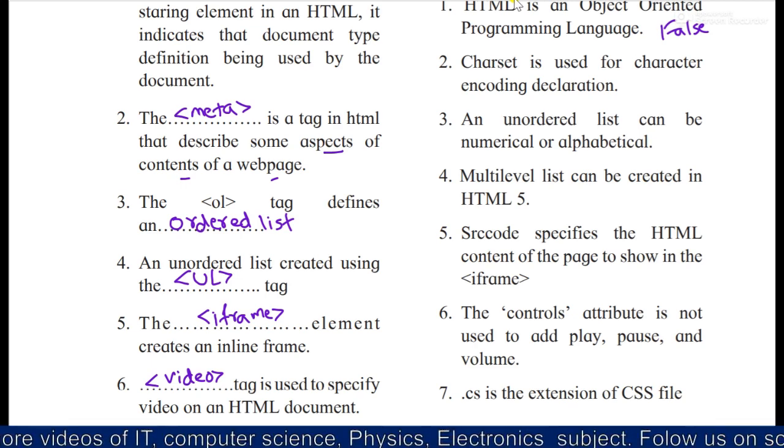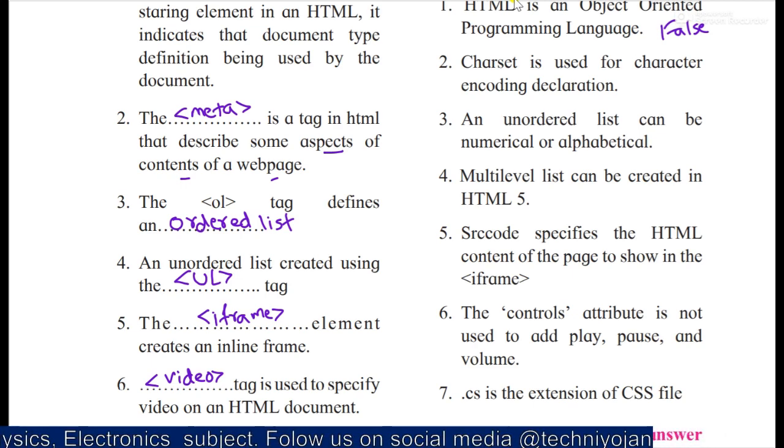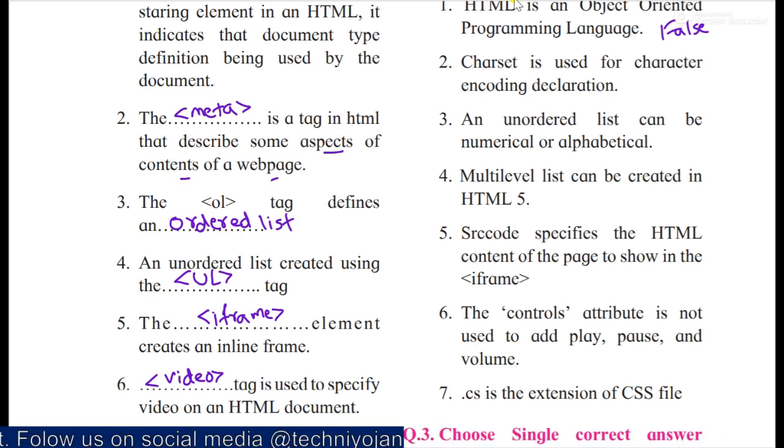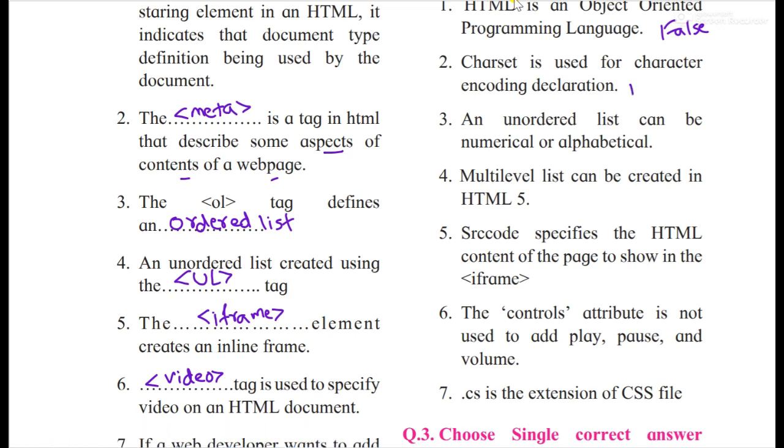Charset is used for character encoding declaration. Yes, it's true. UTF and all character sets. Then an unordered list can be numerical or alphabetical. Is it? No, because an unordered list will be of type dots, hollow square, disks, circle, empty circle like that. And ordered list will be numerical or alphabetical, so it is false.